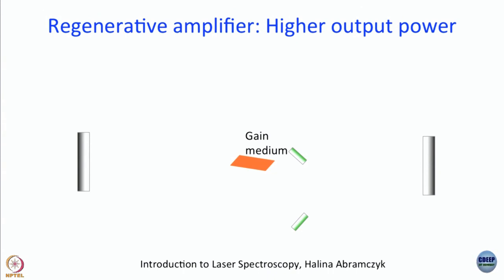The green mirrors are the pump mirrors; the black mirrors are the two cavity mirrors — both are high reflector mirrors. There is no output coupler. When we discussed the cavity dumper, we said there is no output coupler and you get the beam out via an acousto-optic modulator or Pockels cell. Here it is something like that — both are high reflectors.